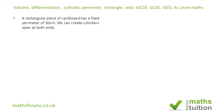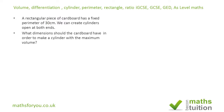What we have here is a cardboard with a fixed perimeter of 30 centimeters — this is important, it's fixed. What we want to do is create a cylinder using this cardboard, and we want to find the dimensions of a cardboard with a perimeter of 30 centimeters that will give us a cylinder with the maximum volume.